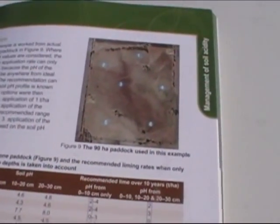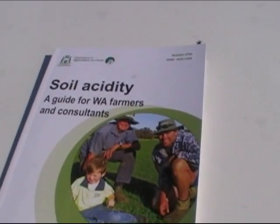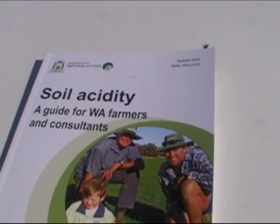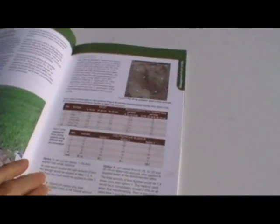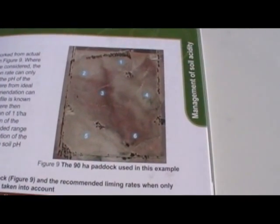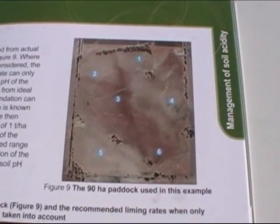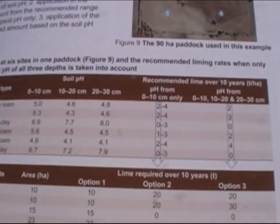There's a reasonable example of zone testing and lime requirement on page 11 of the Soil Acidity Guide for WA Farmers and Consultants, which is DAFWA Bulletin 4784. In this case, aerial photo interpretation and farmer knowledge of soil type variation in the paddock defined a variable rate lime application to address both topsoil and subsoil acidity.